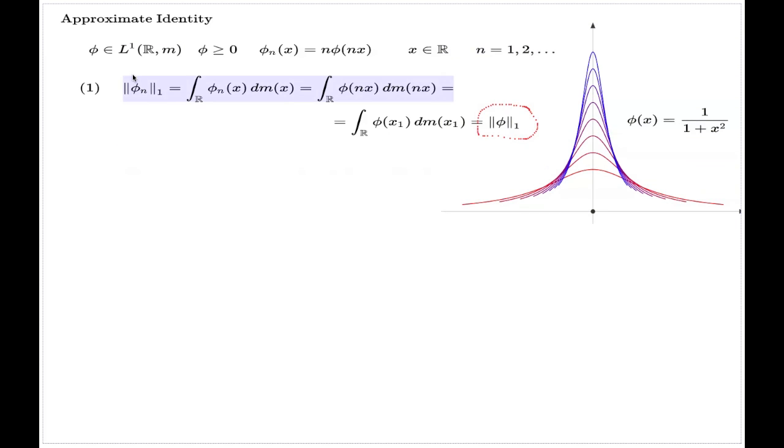And so, in fact, all of these elements of this sequence, all the functions φ sub n, they are all summable and with the norm identical to φ.